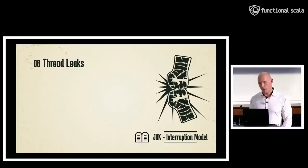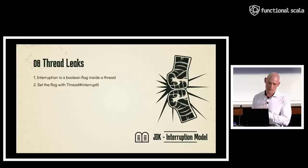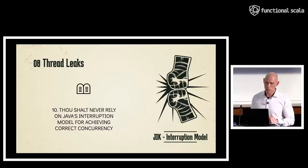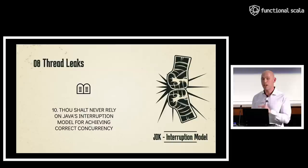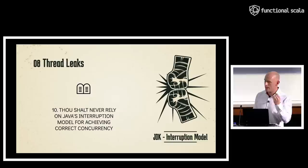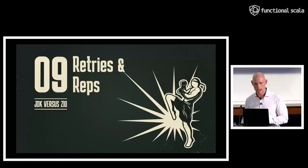JDK's interruption model has 10 commandments, but the most important is the 10th: thou shalt never rely on Java's interruption model for correct concurrency because it is irreparably broken. ZIO's interruption model instantaneously propagates downward, you cannot catch interruption (only delay it inside an uninterruptible scope), and it integrates cleanly with resource handling. It fixes all the problems that Java's thread interruption model has, built on learnings from Java, Haskell, and more.